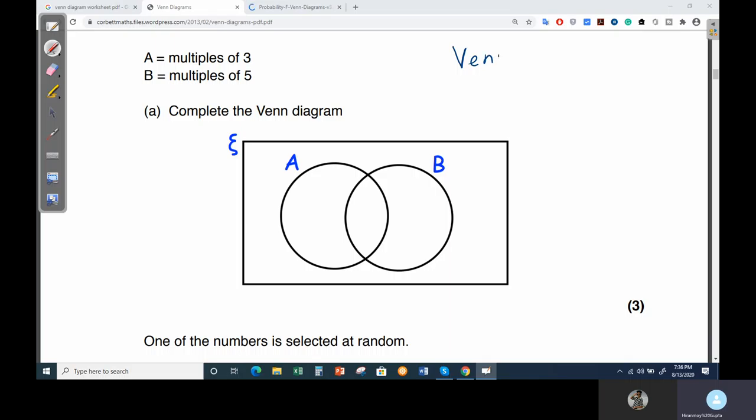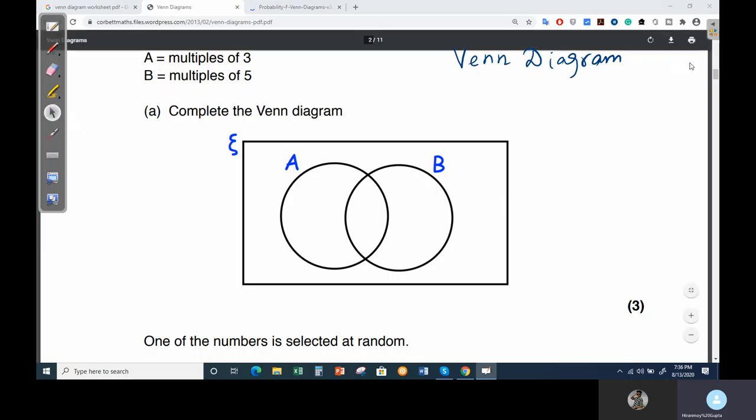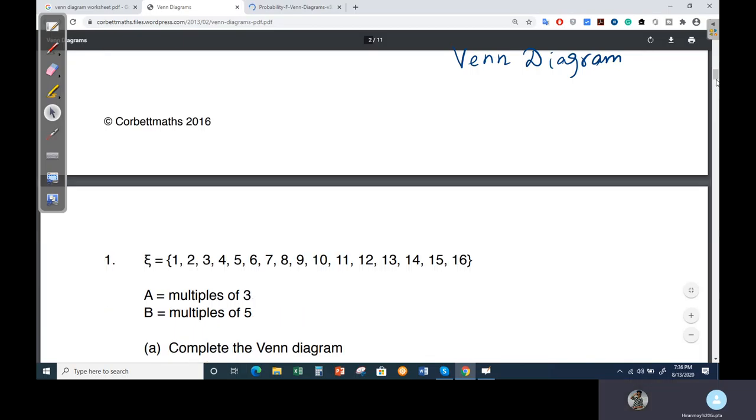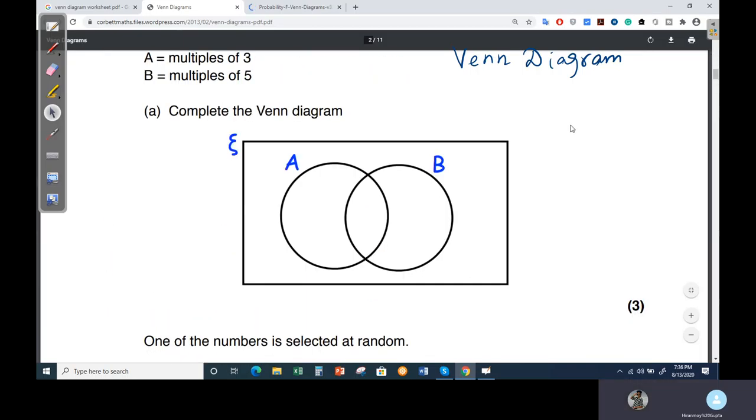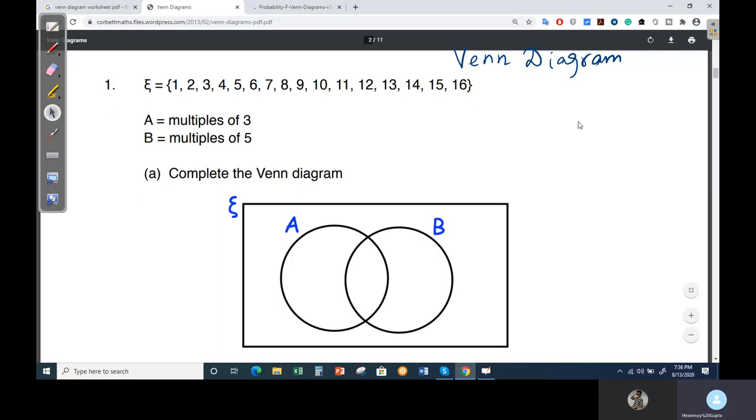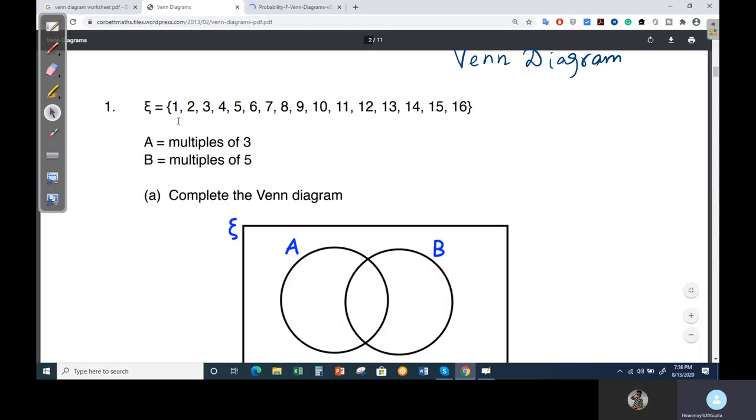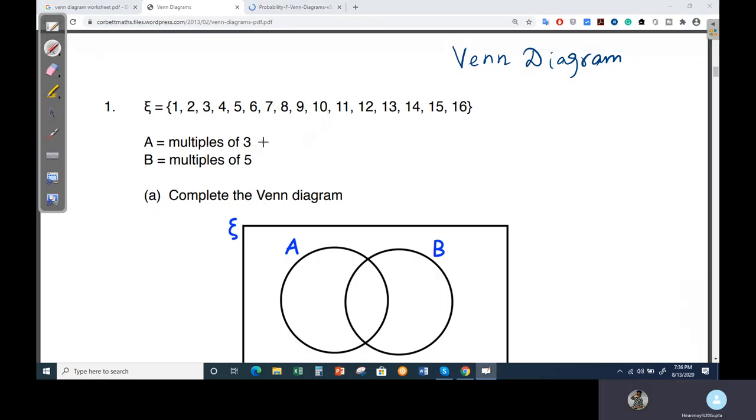So we are going to start with the Venn diagram. Now how does this Venn diagram work? You have to check with the question that is given over here. You can see there is a ξ (Zai). ξ has given all the values like 1, 2, 3, 4 up to 16.